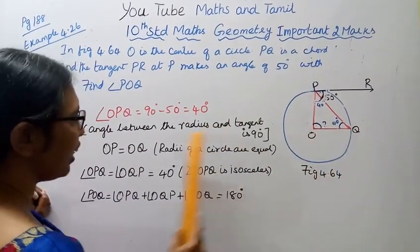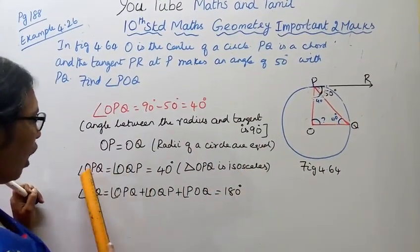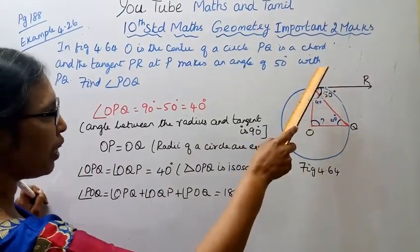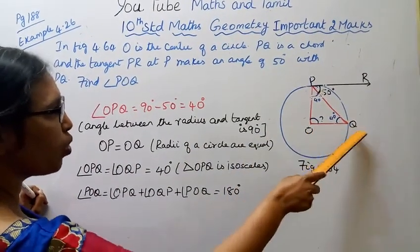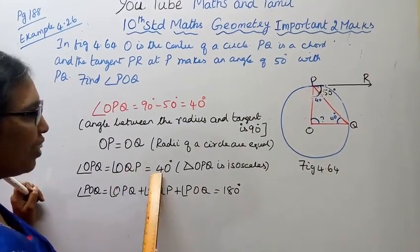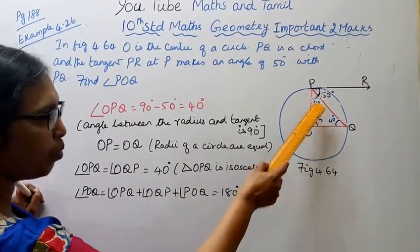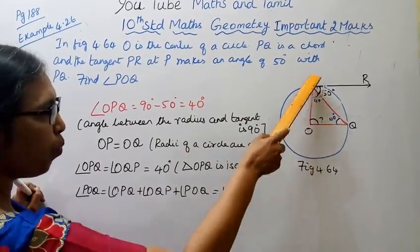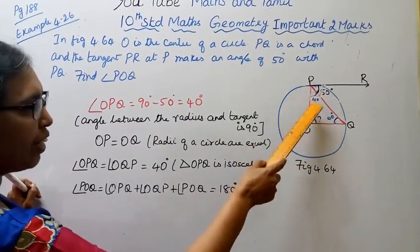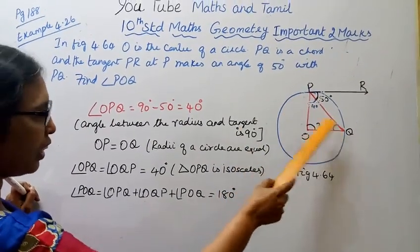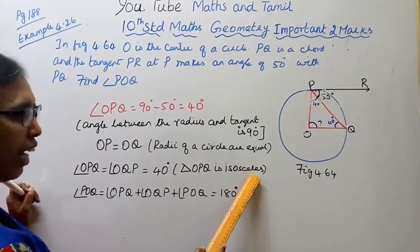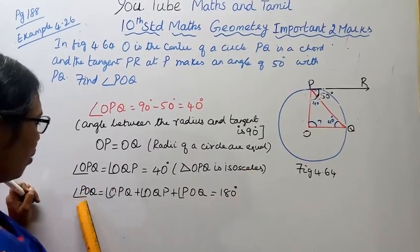OQ and OP are both radii of the circle. Therefore triangle OPQ is isosceles. Angle OPQ equals angle OQP, both equal to 40 degrees. Triangle OPQ is isosceles.